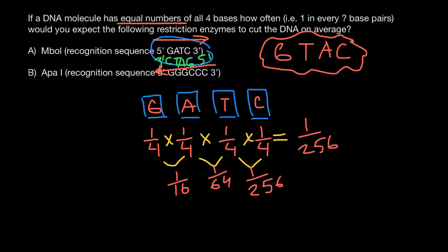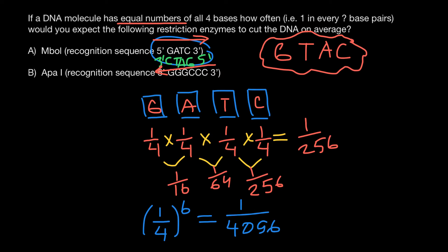The logic for the second recognition site is the same — we just count how many bases we have: one, two, three, four, five, six. So our answer would be one quarter to the power of six, meaning one quarter multiplied by itself six times. We already know four times gives 256; five times gives 1024; multiplying by one quarter once more gives one over 4096. So the answer for the six-base cutter is one over 4096.